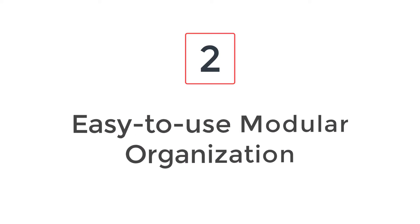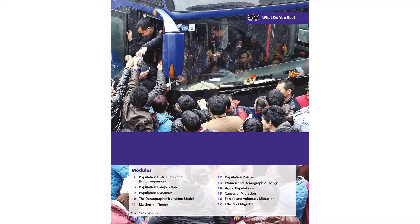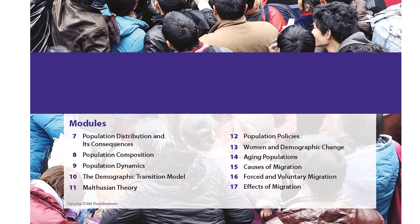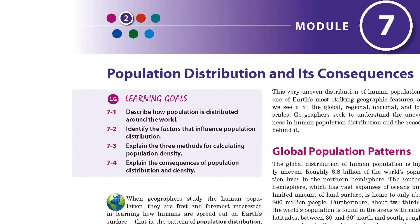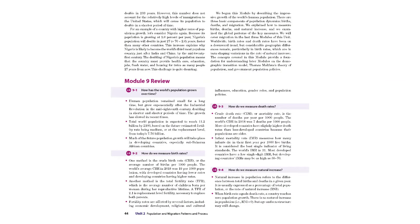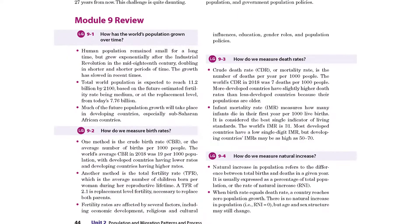Number 2: Easy to use modular organization. A modular organization combines content and AP exam practice into brief 1-2 day lessons. Shorter modules help students absorb the information without being overwhelmed and help you more easily pace your course. Learning goals are listed at the beginning of each module to focus students' reading and guide their comprehension. Bulleted summaries conclude the modules, highlighting key takeaways that students should master before moving on to the next module.